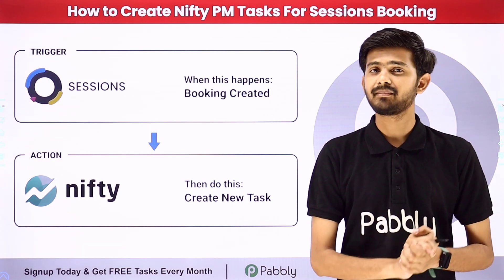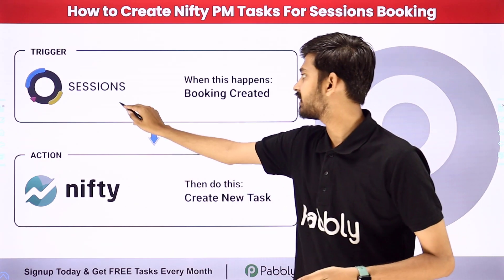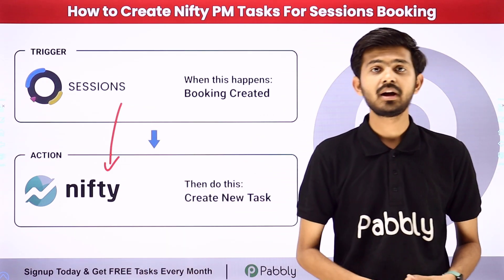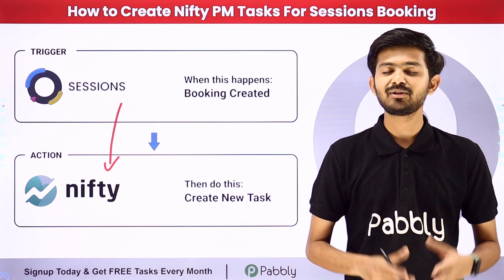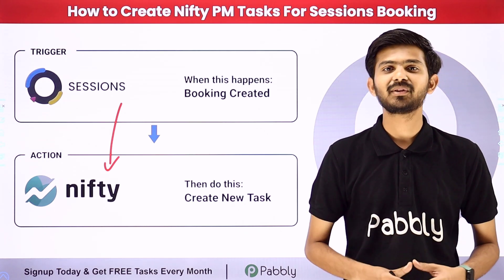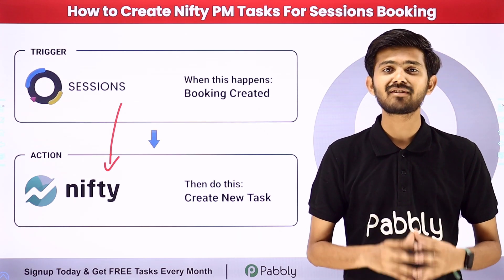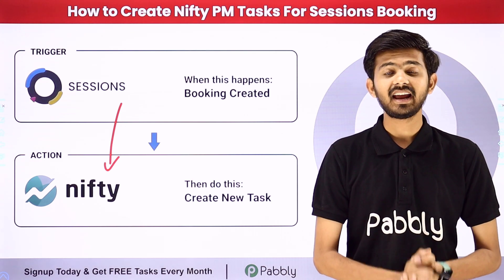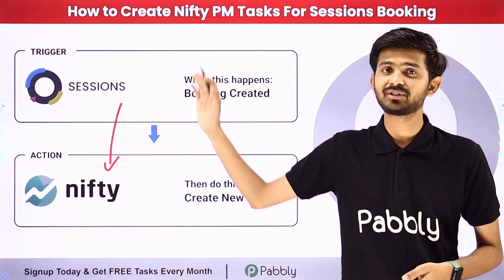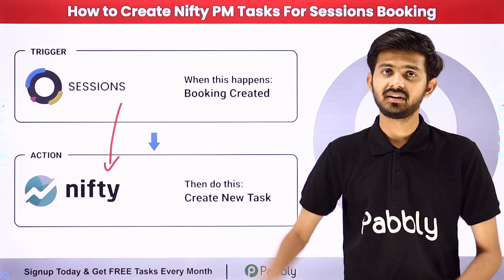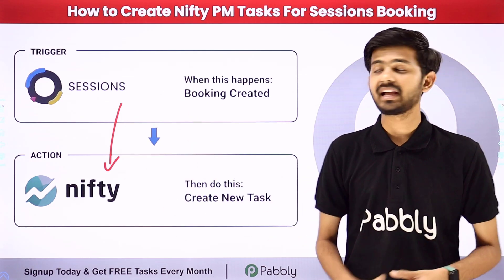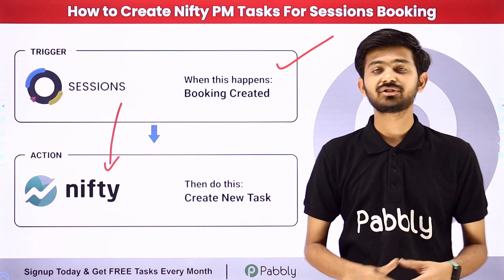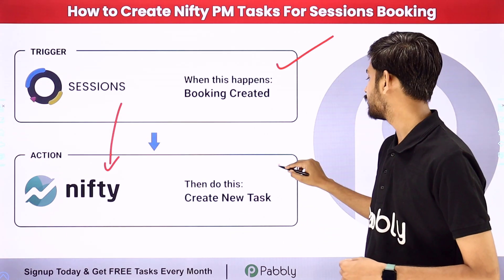For this, I have to build a simple connection between Sessions and Nifty PM. To build this connection, I'm going to use Pabbly Connect, which is an amazing software for automation and integration. In Pabbly Connect, I have to use trigger and action. The trigger application will be Sessions and the action application will be Nifty.